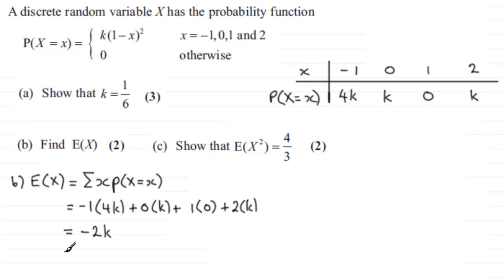Now we know that K is equal to 1 sixth. So we've got minus 2 times 1 sixth which is minus 2 sixths and that simplifies to minus 1 third. So there's your expected mean E of X in other words.